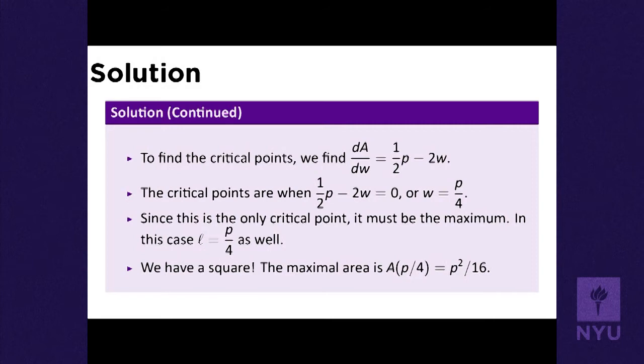You could probably make some kind of symmetry argument that it would have to be a square, because if you've got a rectangle and you flip it around you've got another rectangle, so if one is maximal the other would have to be maximal too. But this is a nice calculus method for maximizing the area of a rectangle subject to a fixed perimeter.